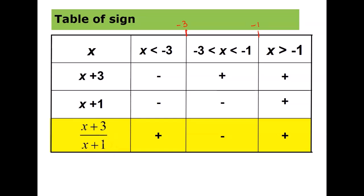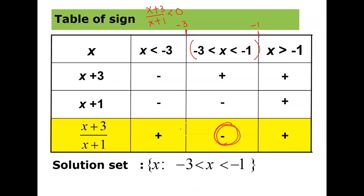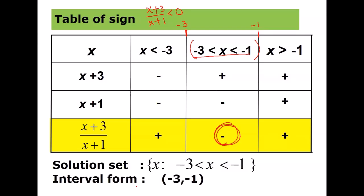Referring back to the standard form, we want (x+3)/(x+1) to be less than zero, meaning we want the negative sign. That corresponds to the middle interval. So the solution is negative 3 less than x less than negative 1, which in interval notation is the open interval (negative 3, negative 1), not including negative 3 or negative 1. This is the table of sign method. Thank you for watching.